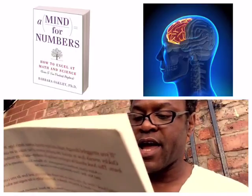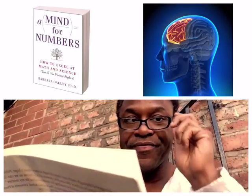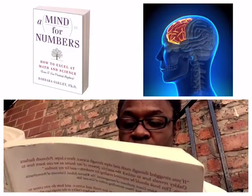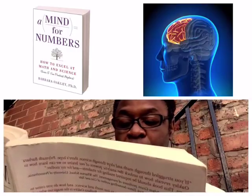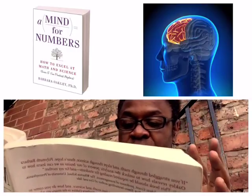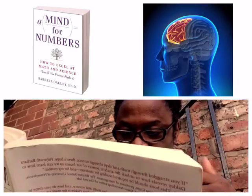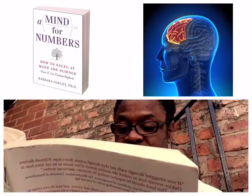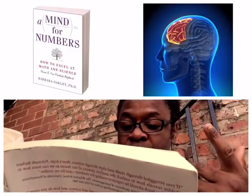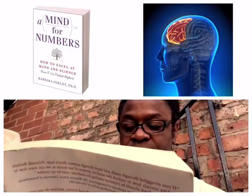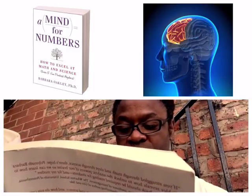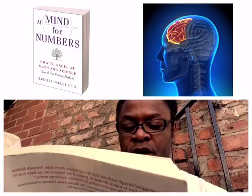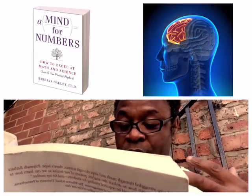Diffuse mode thinking is also essential for learning maths and science. It allows us to suddenly gain a new insight on a problem we have been struggling with, and is associated with big picture perspectives. Diffuse mode thinking is what happens when you relax your attention and just let your mind wander. This relaxation can allow different areas of the brain to hook up and return valuable insights. Unlike focus mode, diffuse mode seems less affiliated with any one area of the brain — you can think of it as being diffused throughout the brain.